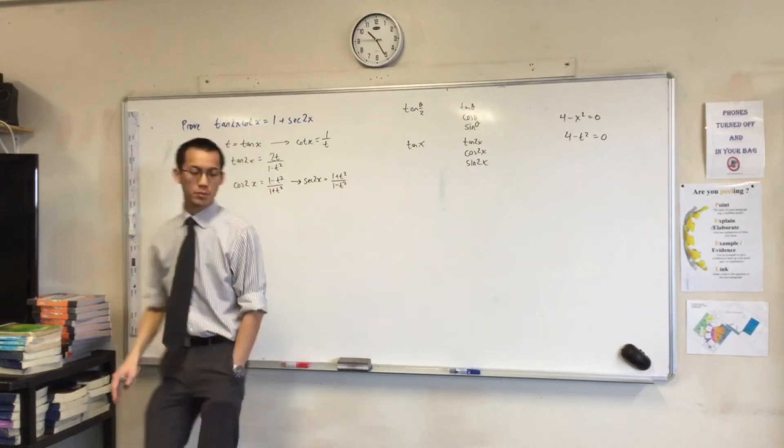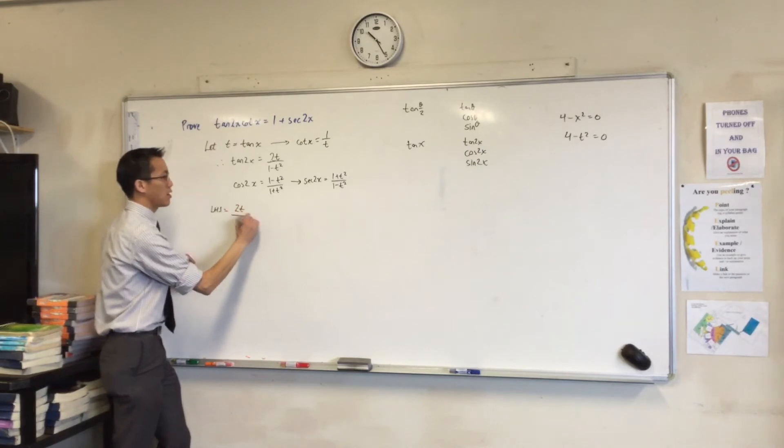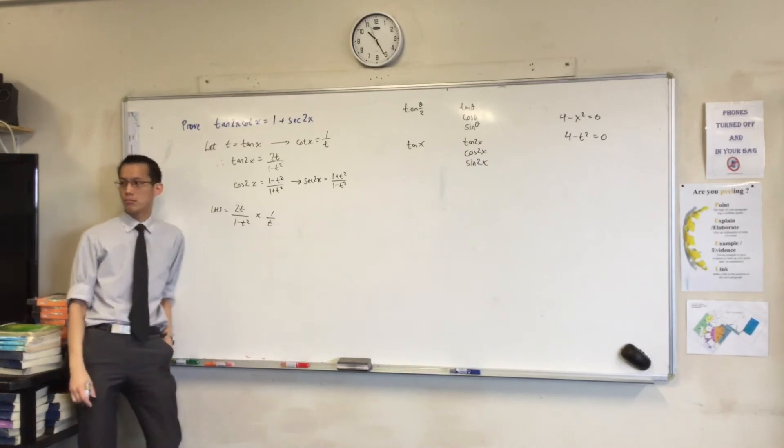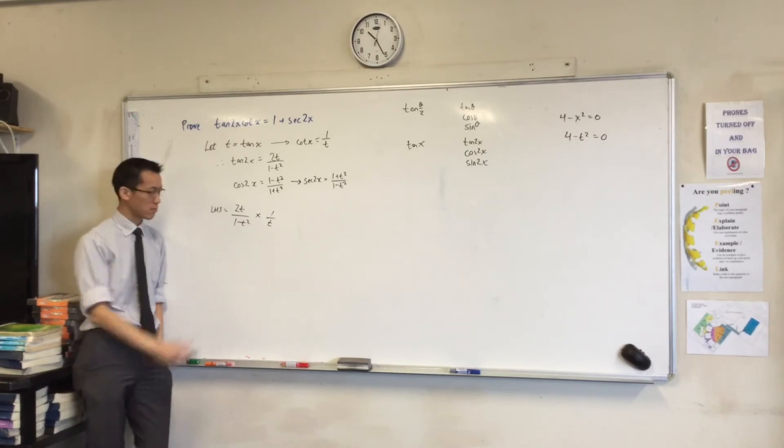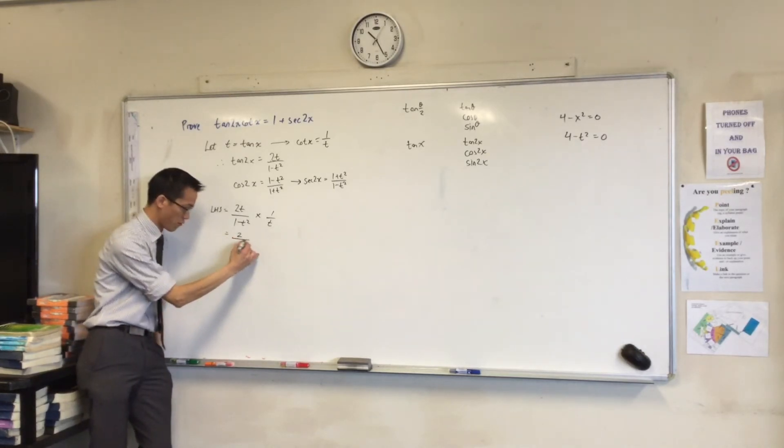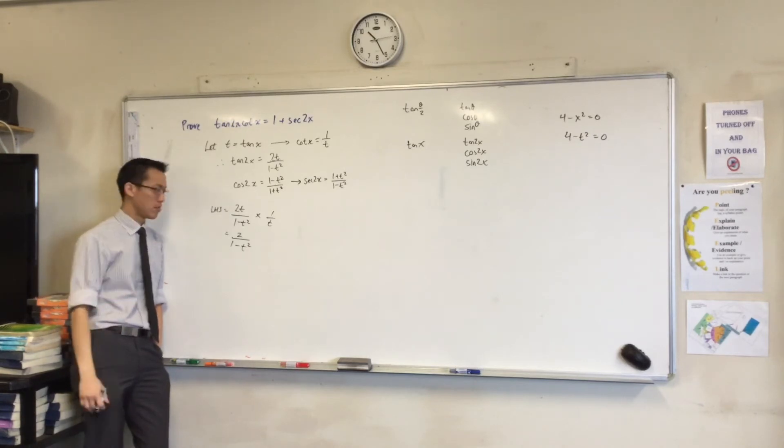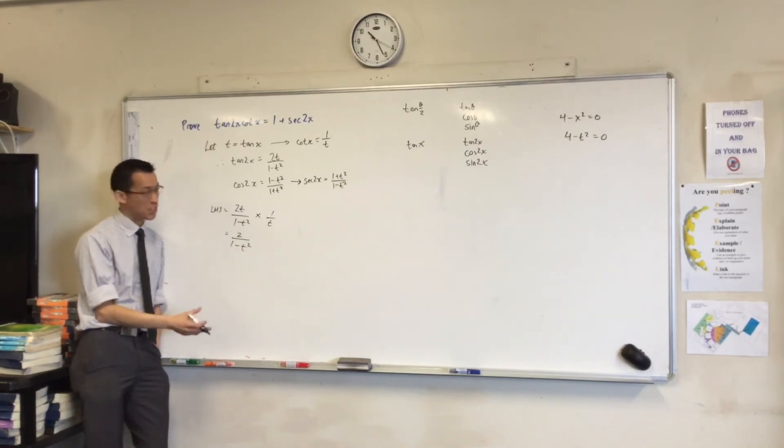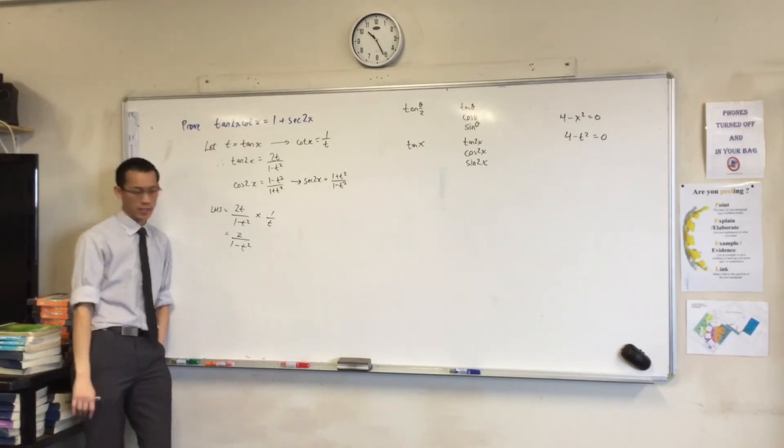Now we're ready to do some substitution. So I'm going to go left hand side equals 2t on 1 minus t squared times 1 over t. Have I just done the straight substitution? Is that it? Yeah. 2 over... Is there anything else I can do? You could, but I know that I'm not going to get any advantage out of that because I look at all the other t results, they don't have anything factorized like that, so I'm leaving it.